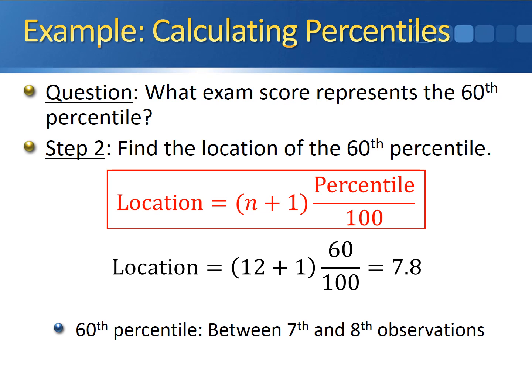What this is telling us is that the 60th percentile is between the 7th and 8th observations. But since 7.8 is closer to 8, it means that the 60th percentile is closer to the 8th largest observation than it is to the 7th largest observation.